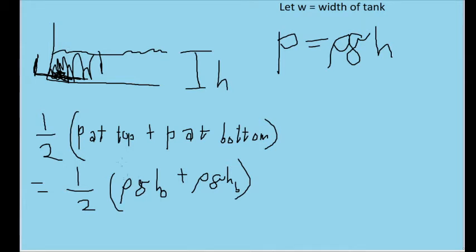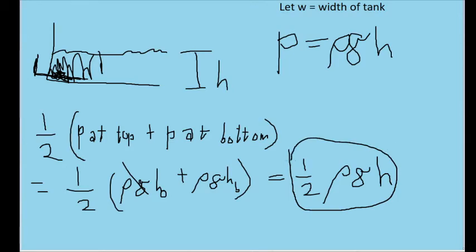So one of these terms is just going to cancel out. So in other words the total pressure we're looking for is just one half times rho times g, acceleration due to gravity, times whatever our depth is. And this is the formula we'll need to solve this.